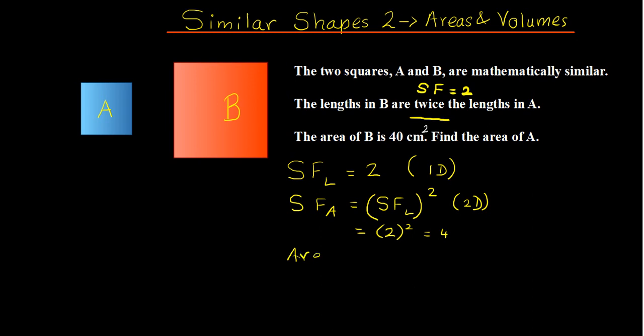A is the smaller shape, so to find the area of A we divide by the scale factor: 40 divided by 4, which is 10 centimeters squared. To summarize: the question gave us a length scale factor; we squared it because area is 2D, giving a scale factor of area of 4; then we divided the area of the larger shape by that scale factor to get 10 centimeters squared.